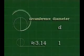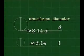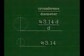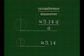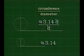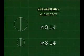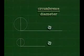The circumference of any circle is a little more than three times its diameter. In other words, the ratio of circumference to diameter is about 3.14, a fundamental constant of nature denoted by the Greek letter pi.